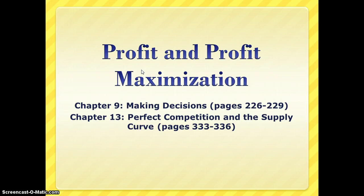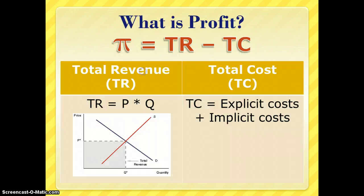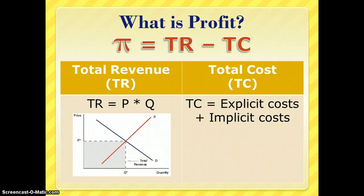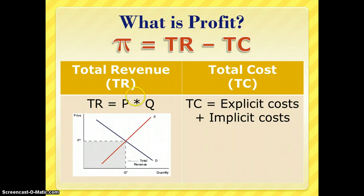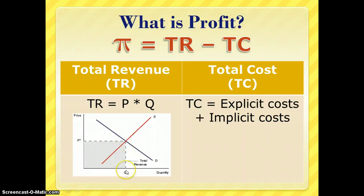Profit is simply the difference between total revenue and total cost. When we measure revenue, we're measuring the price of a good times the number of goods sold, which gives us total revenue. Whatever the equilibrium price and quantity are, when we multiply those two together we get the area of this box, and that's our total revenue.